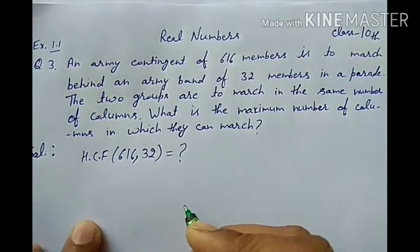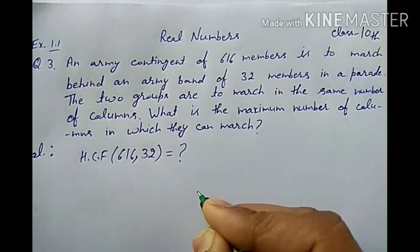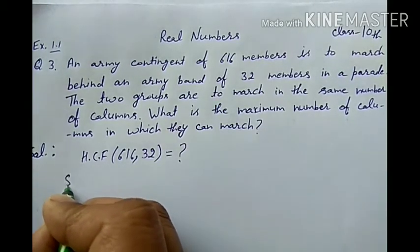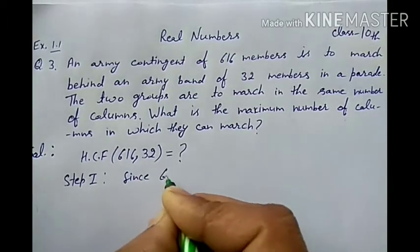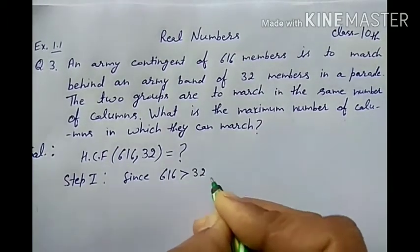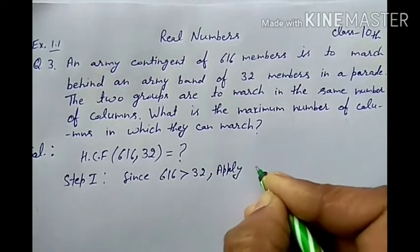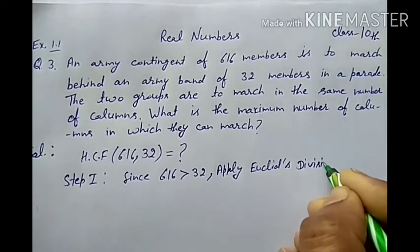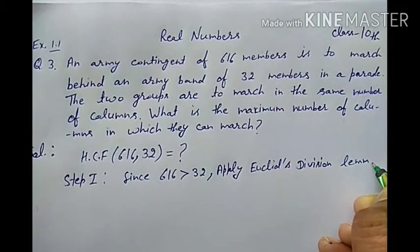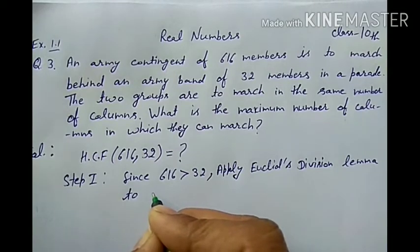For this we have to find out the HCF of 616 and 32. And for this we will take help of the long division method and Euclid's division algorithm. So let's start. For step 1, since 616 is greater than 32, apply Euclid's division lemma to 616 and 32.